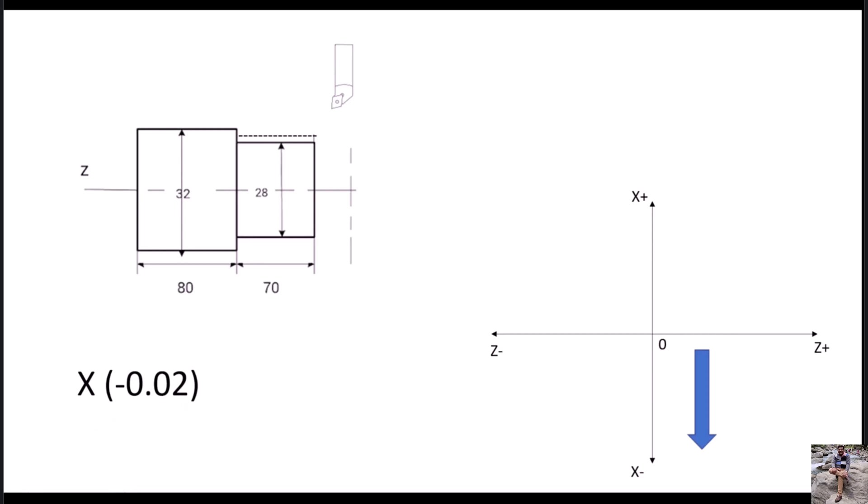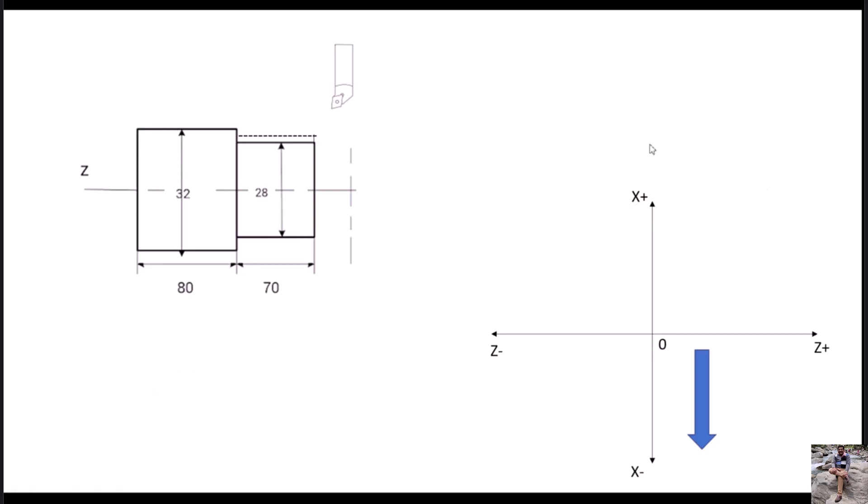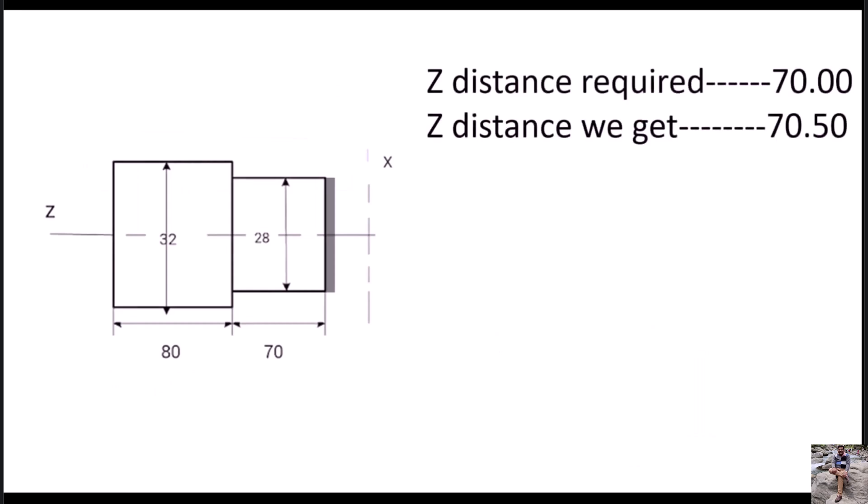Now we have X with a value of 0.02, and we are going to give this offset to the finishing tool. We have to determine whether to give this offset as plus or minus. To remove this extra material, the tool must move downward. In the X and Z graph, moving downward in X means minus and moving upward in X means plus. Our tool is moving downward in X, which means minus, so we give the offset as X minus 0.02 to the finishing tool.